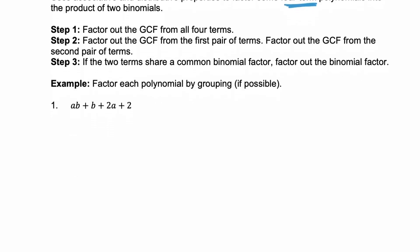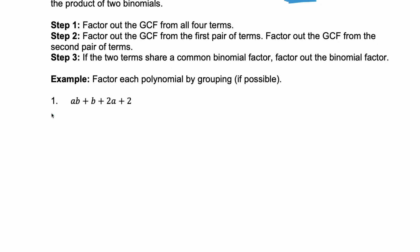So here in example one, the first step is to factor out the GCF. So what's our GCF? What do all four of these terms have in common? None. Nothing. There is no GCF. So we're good. Step two, we're going to factor out the GCF from the first pair of terms, and then factor out the GCF from the second pair of terms. This is that grouping part. So I group the first two, and I group the second two. When I look at the first two, AB plus B, what do they have in common? A B. If I factor out the B, I'm left with A plus one.